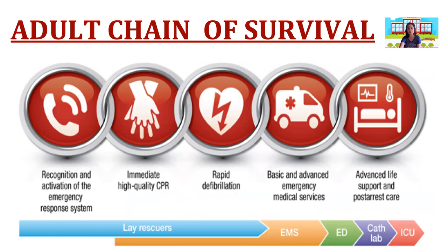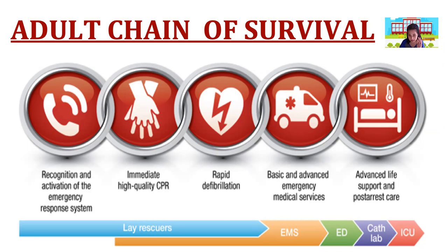For the adult chain of survival, follow these steps: recognition and activation of the emergency response system, then immediate high-quality CPR. After calling 911, start CPR immediately. Then rapid defibrillation — ask for help and have someone bring a defibrillator or AED. Then basic and advanced emergency care when the ambulance arrives, followed by advanced life support and post-arrest care in the hospital.